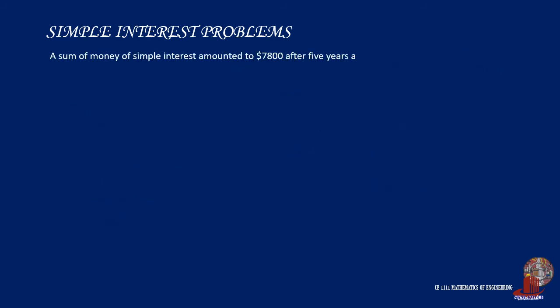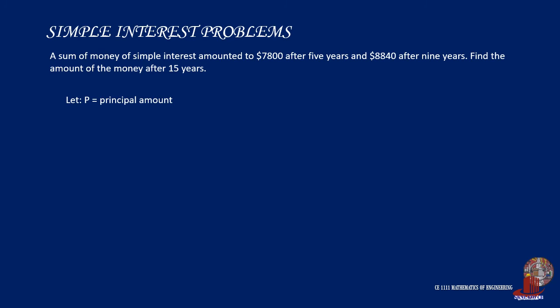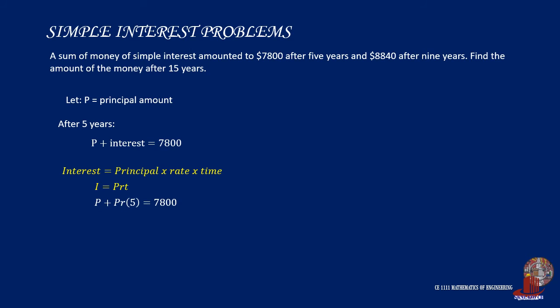The third example: a sum of money at simple interest amounted to $7,800 after 5 years and $8,840 after 9 years. Find the amount after 15 years. Let P be the principal amount. After 5 years: P plus PR times 5 equals 7,800 — equation 1. After 9 years: P plus PR times 9 equals 8,840 — equation 2. Using elimination, a variable should be eliminated.